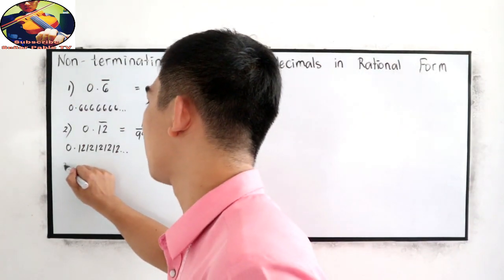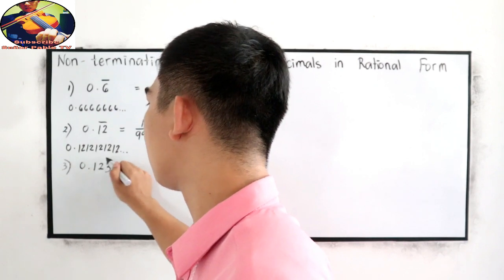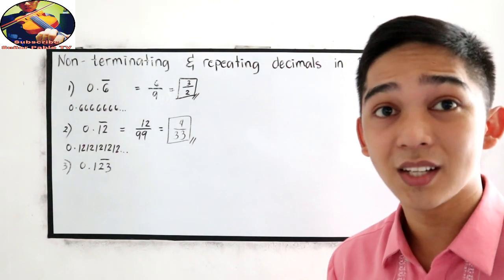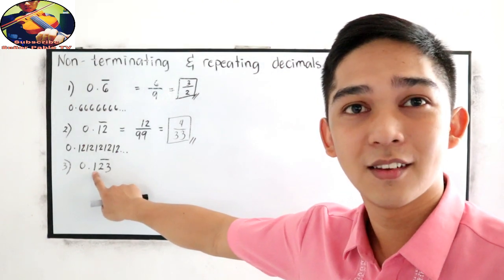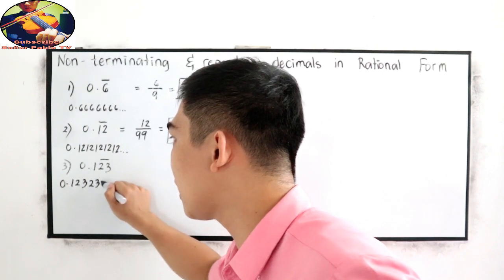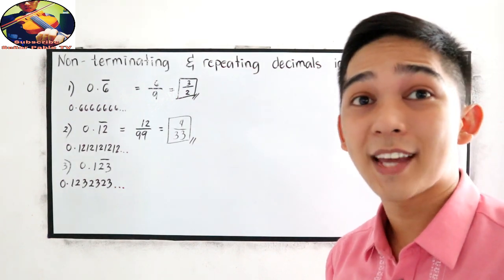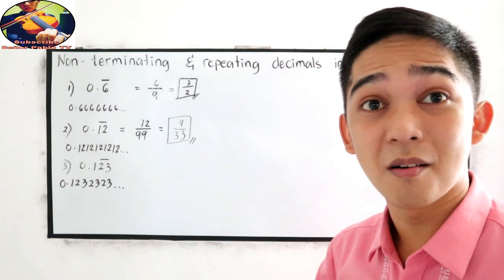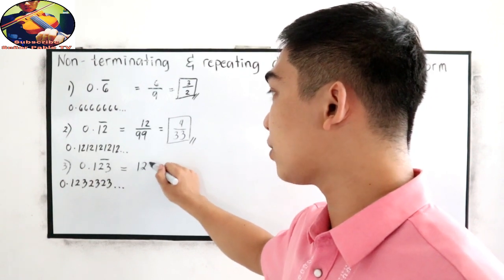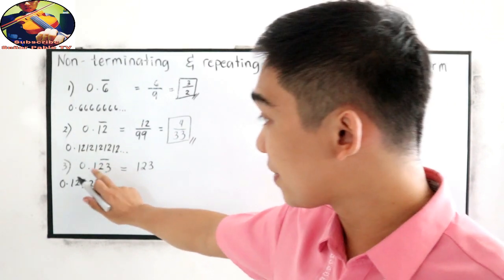Number 3: 0.123 where the bar is located on 2 and 3 only — 1 is not included. So that is 0.1232323 and so on. How are we going to write that decimal into rational form? Our shortcut: copy 1, 2, 3, then subtract the number that is not included in the bar — in this case, 1.